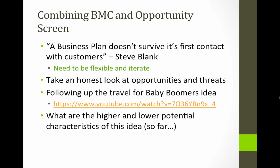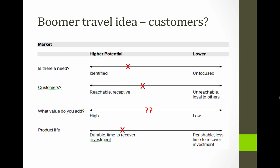What you'll look at next is the travel for baby boomers idea — looking at the higher and lower potential characteristics of this idea. The higher potential: they seem to have identified a need, and they think their customers are reachable, but they're not really sure because they're planning to put up a website — how do they know if people will come? They don't really know what value they add yet. The product life is probably durable with time to recover investment, because there isn't a lot of investment in the first place. So you start to see how the screen can be used, and they clearly need to work on whether their customers are reachable and whether customers perceive them as adding value.